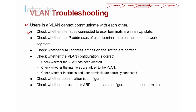First, you need to check whether the interfaces connected to the user are in up state or not. How do you do that? Use the display VLAN command. When you do display VLAN, if you can see that it's U, it means it's up. D means it's down.